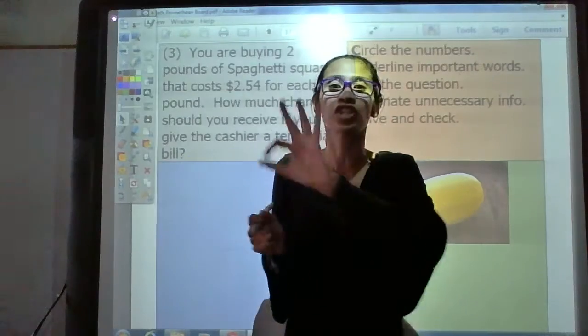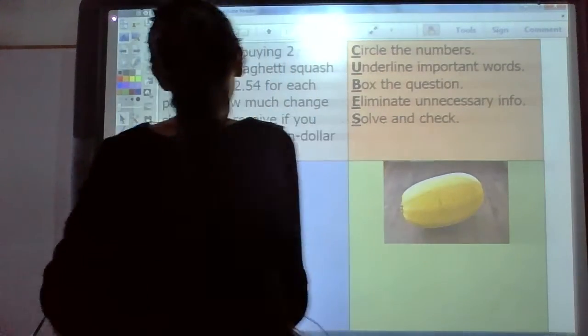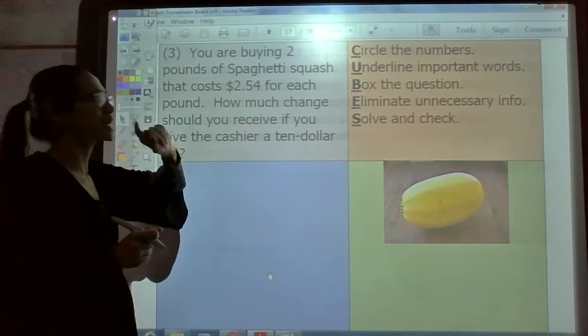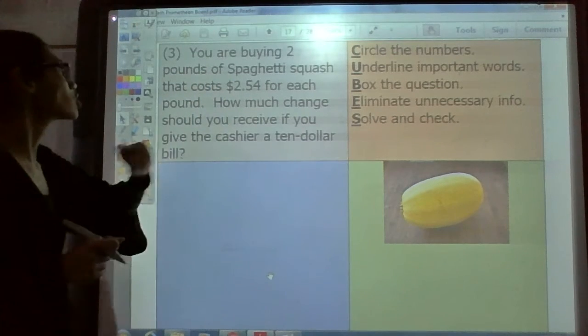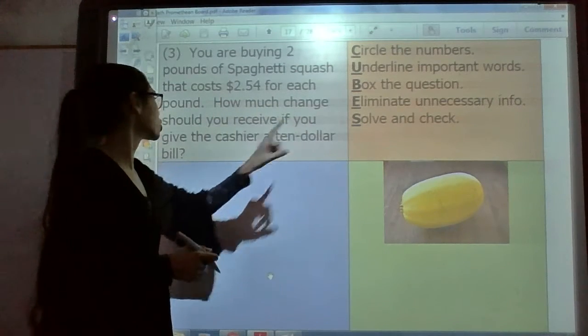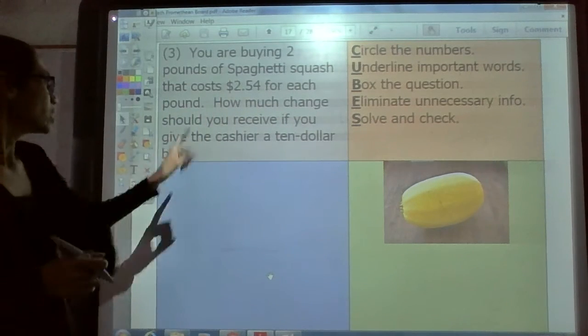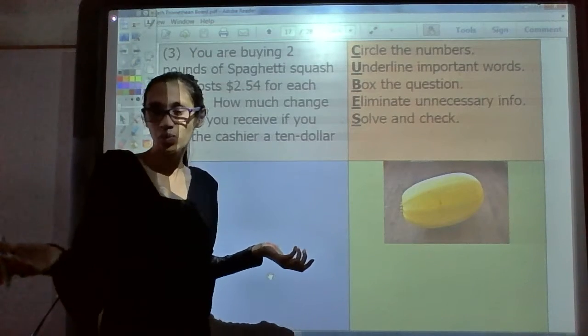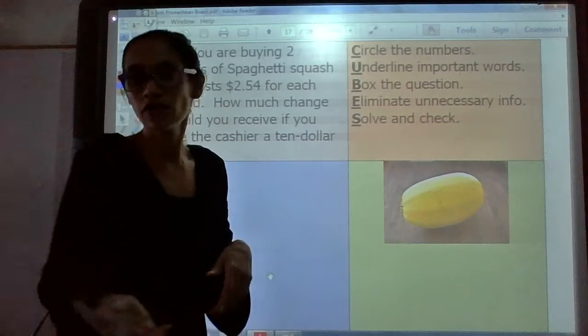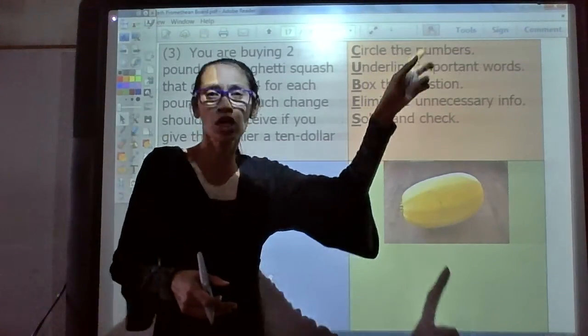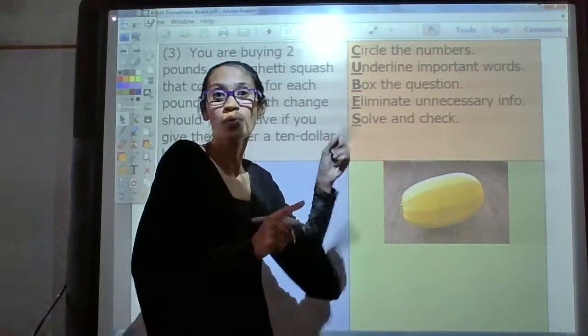This is question number three. Let's take a look. Read it with me. It says you are buying two pounds of spaghetti squash that costs $2.54 for each pound. How much change should you receive if you give the cashier a $10 bill? We're at the grocery store, farmer's market, buying some spaghetti squash. Let's use our CUBES clues to solve the problem.